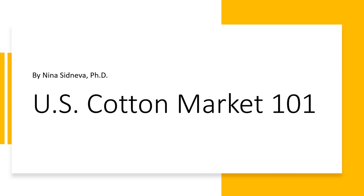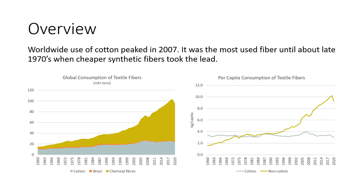Hello, today I will talk about the U.S. cotton market, its main demand and supply drivers. I begin with an overview of global cotton production and consumption trends in the last 60 years. Cotton is primarily used to make clothing. It is a natural textile fiber that comes from a cotton plant. Cotton needs a warm and humid climate; its cultivation area is 30 degrees south and north from the equator, which covers a fairly large area.